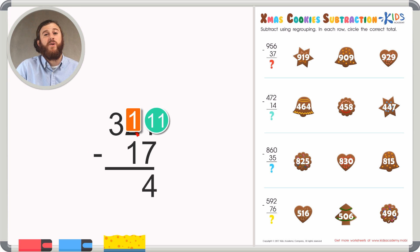Now we can just move along and continue subtracting. 1 minus 1 is 0. And 3 minus nothing is 3. Giving us an answer of 304.